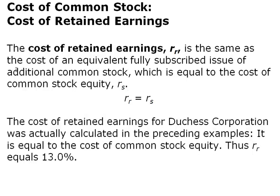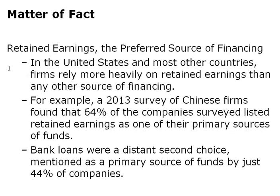The cost of retained earnings is the same as the cost of equivalent fully subscribed equity, so R_R equals R_S. Retained earnings is the preferred source of financing because the company already has it and doesn't need to apply for it. Firms in the United States rely heavily on retained earnings to finance assets. In 2013, a survey of Chinese firms found that 64% listed retained earnings as their primary source of funds, with bank loans a distant second at 44%.